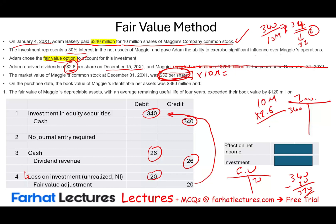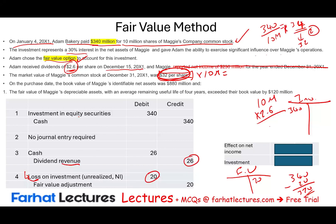Now we summarize the effect on income and the balance sheet. For income: we reported $26 million in dividend revenue and a $20 million unrealized loss, for a net effect of $6 million increase in net income. For the balance sheet: the investment is carried at $320 million at year-end, which equals $32 per share times 10 million shares. That's the fair value method result.